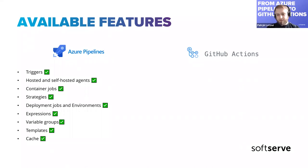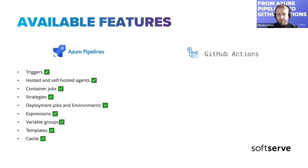We have templates, which allow us to not create the same stuff multiple times — we can reuse parts of our pipelines. We also have cache, which is useful when you have npm packages or any other Java/.NET packages to restore. Tasks and the possibilities here are basically whatever you need. Those are the features I've been using a lot while working with Azure Pipelines.